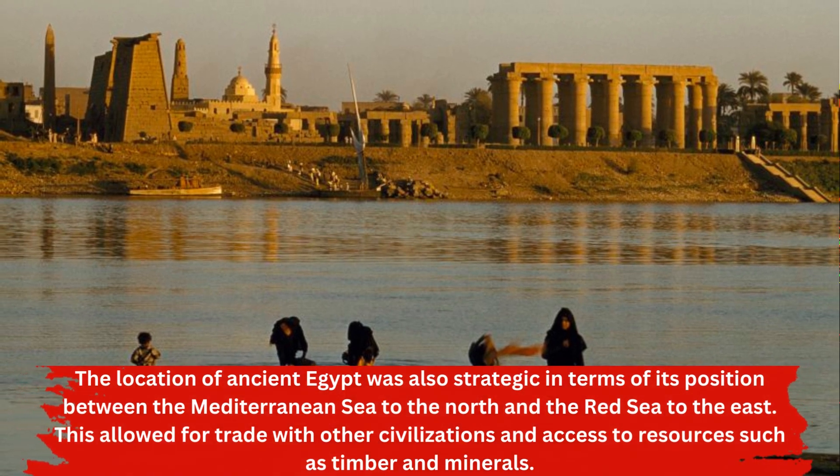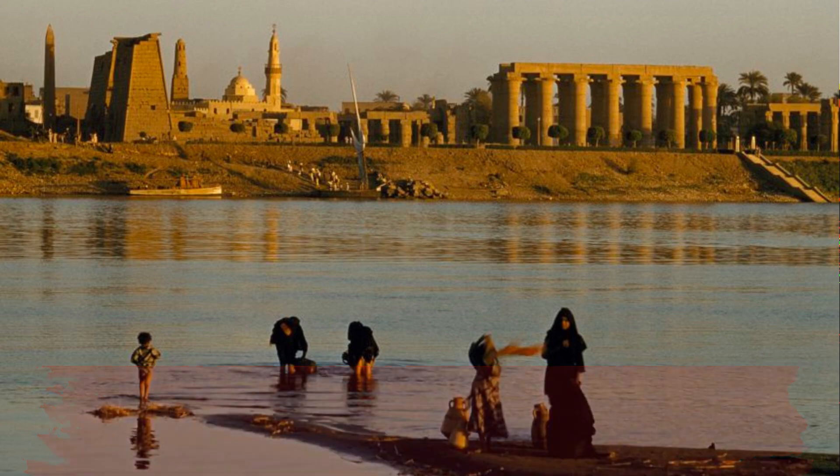The location of ancient Egypt was also strategic in terms of its position between the Mediterranean Sea to the north and the Red Sea to the east. This allowed for trade with other civilizations and access to resources such as timber and minerals. The Nile Delta, where the Nile empties into the Mediterranean, was an important center of trade and commerce.